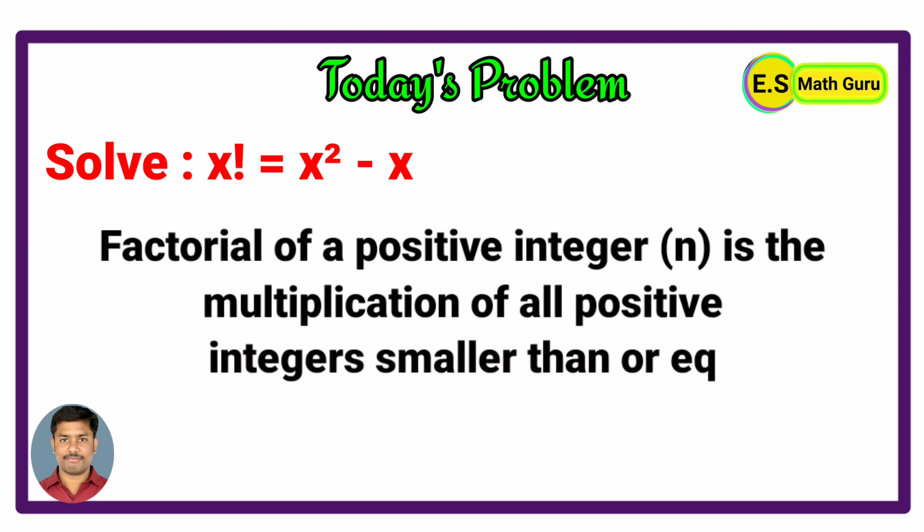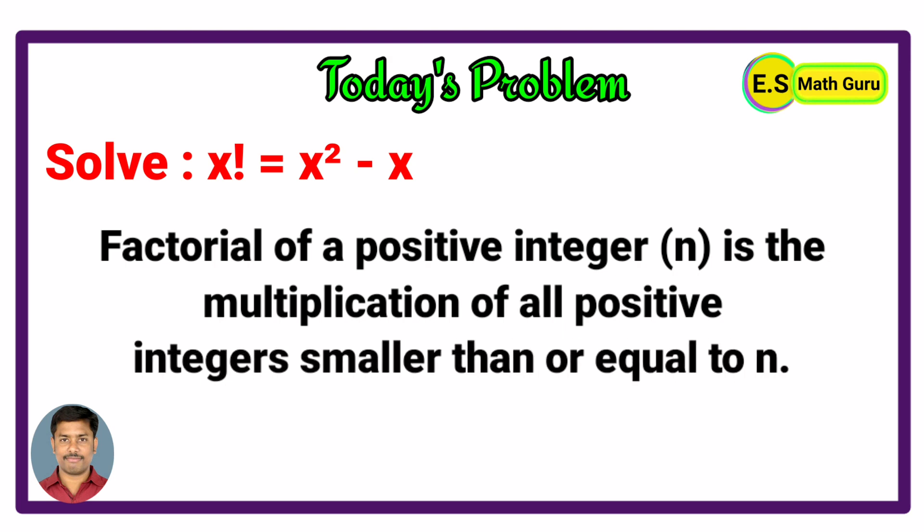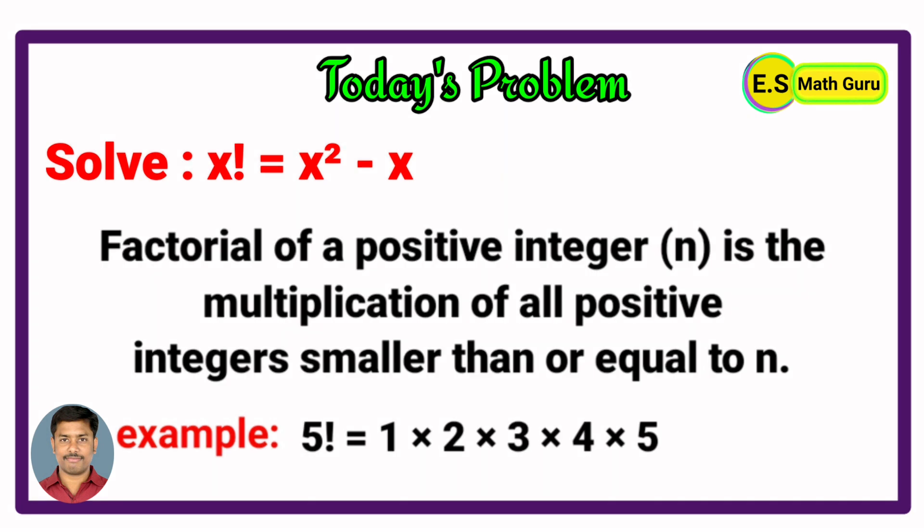positive integers smaller than or equal to n. For example, 5 factorial is equal to the product of all the